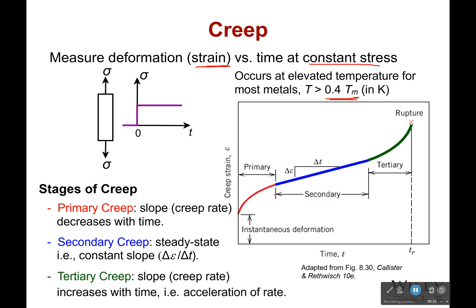This is called creep strain. To begin with, nothing happens — this is the instantaneous deformation from the load. Then as we increase temperature, things start happening. There are three stages to creep: primary creep, where strain increases quickly then slows down; secondary creep, which is fairly steady state; and tertiary creep, which is when you're going towards failure at an increasing rate. Creep is just an increasing strain that doesn't occur because you're increasing force — it's only because the temperature is fairly hot.